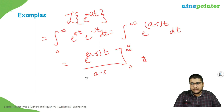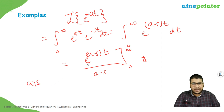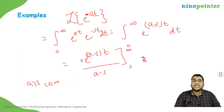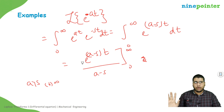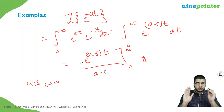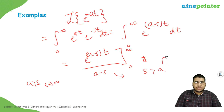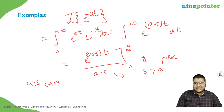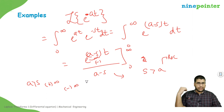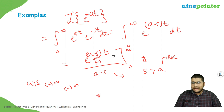Plugging in infinity is an interesting case with two scenarios. If a is greater than s, the exponent is positive and the term goes to infinity — that is not something we want. So the condition for the Laplace transform to converge is that s must be greater than a. This is called the region of convergence. When s is greater than a, the exponent is negative, the term at infinity goes to zero, and we get a finite result.